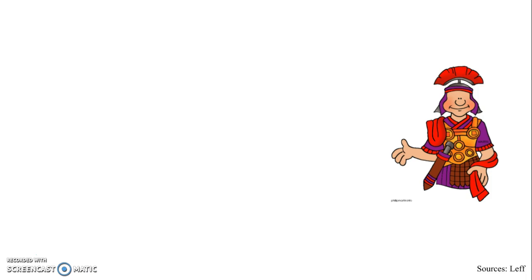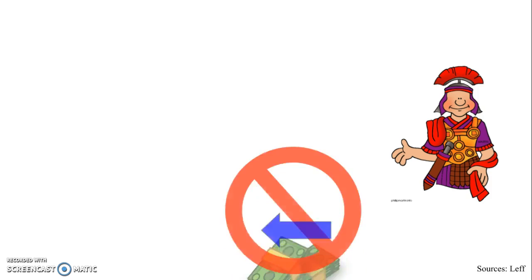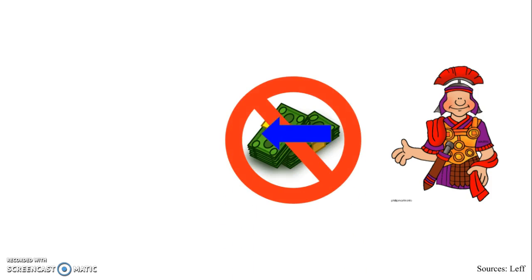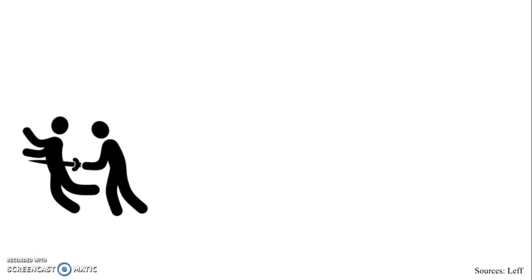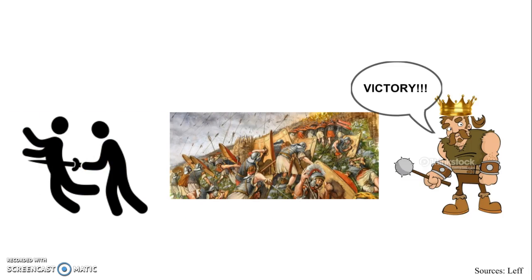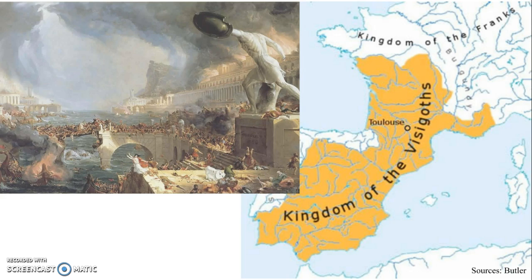Recruiting barbarians in the army began to backfire on Rome, as the barbarians were not always loyal. In 410, the Visigoths felt they were not getting what they were promised. So, in the Battle of Adrianople, they rebelled, fought against Rome, and won. They then sacked Rome and allowed other groups to take control of Gaul, Spain, and North Africa, putting the Mediterranean in disarray.